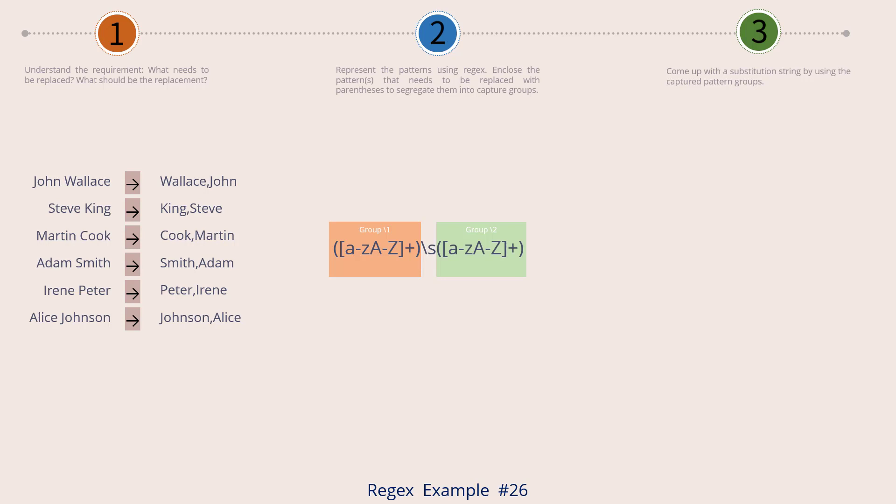Why do we need lowercase as well as uppercase ranges? Note that the first name as well as the last name begin with a capitalized letter, which is why we need both lowercase and uppercase ranges inside the character class. And the plus means one or more occurrences.